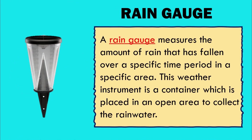What is a rain gauge? A rain gauge measures the amount of rain that has fallen over a specific time period in a specific area. This weather instrument is a container which is placed in an open area to collect the rainwater.